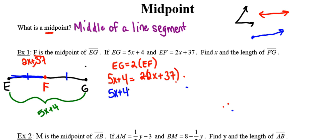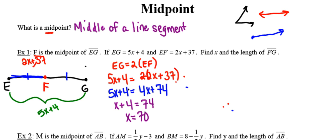Now that I've got my equation set up, I'm going to distribute on the right-hand side first. At this point I've got X's on both sides, so I'm going to go ahead and subtract 4X from both sides, and I find that X is equal to 70. So the first part of the problem, they wanted me to find X — I'm done. However, they were a little sneaky here and also asked me to find the length of line segment FG.